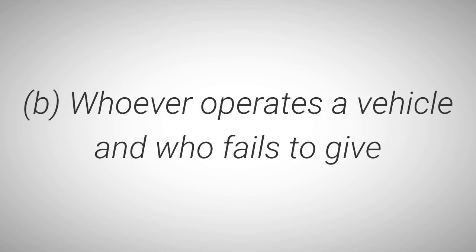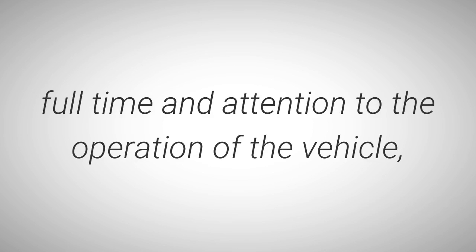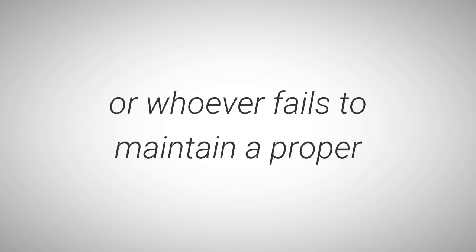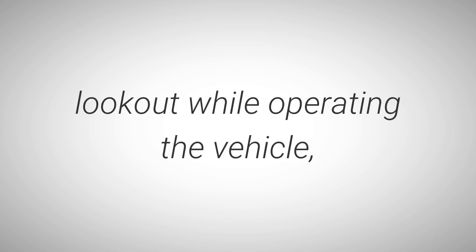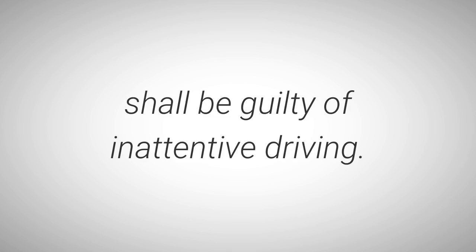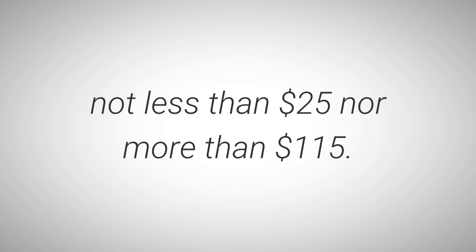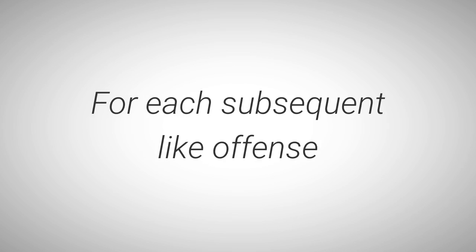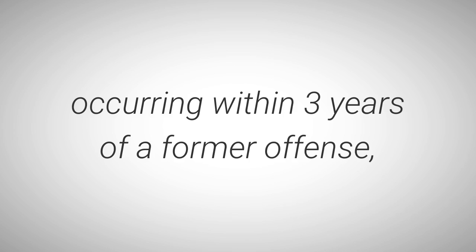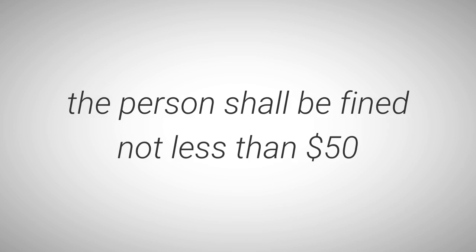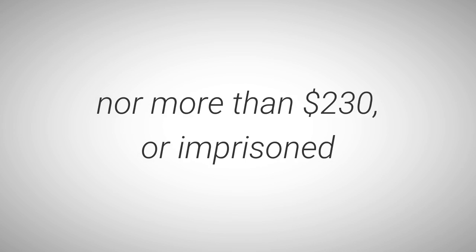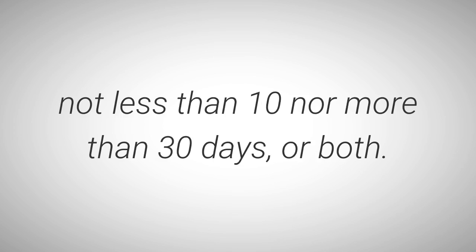Part B: Whoever operates a vehicle and fails to give full time and attention to the operation of the vehicle or whoever fails to maintain a proper lookout while operating the vehicle shall be guilty of inattentive driving. Part C: Whoever violates this section shall, for the first offense, be fined not less than $25 nor more than $115. For each subsequent like offense occurring within three years of a former offense, the person shall be fined not less than $50 nor more than $230 or in prison not less than 10 nor more than 30 days or both.